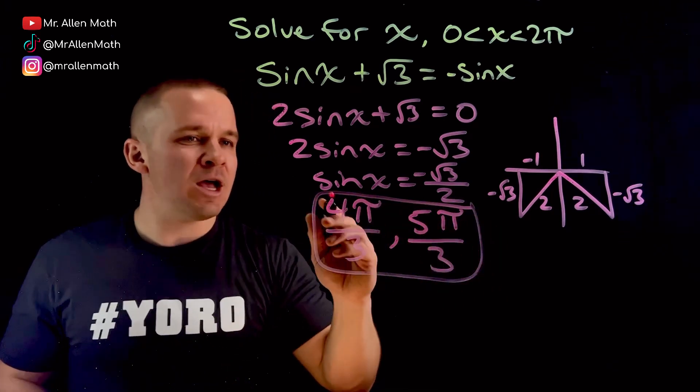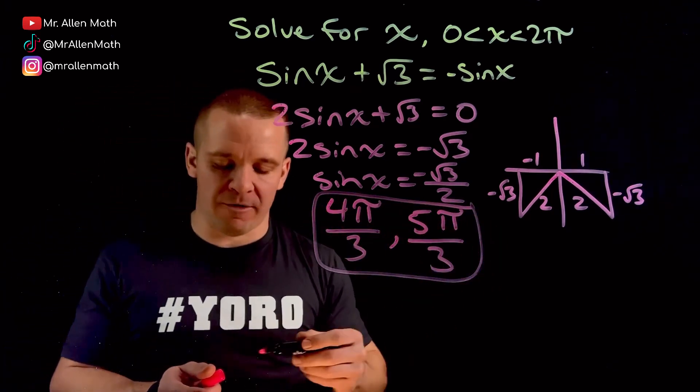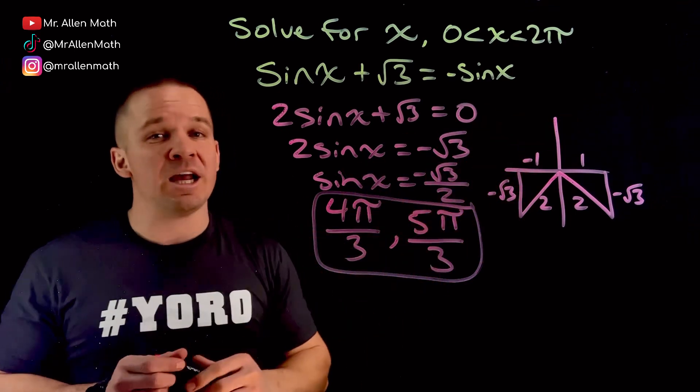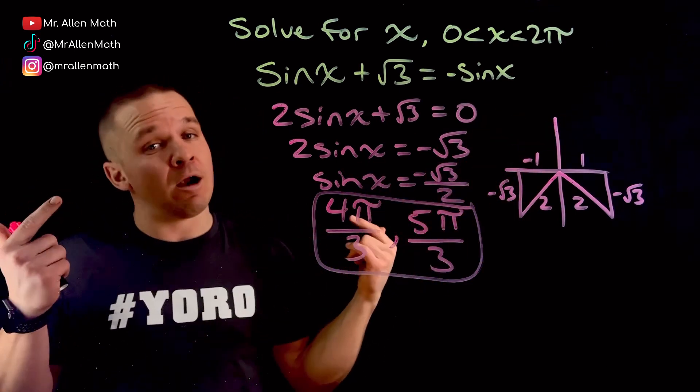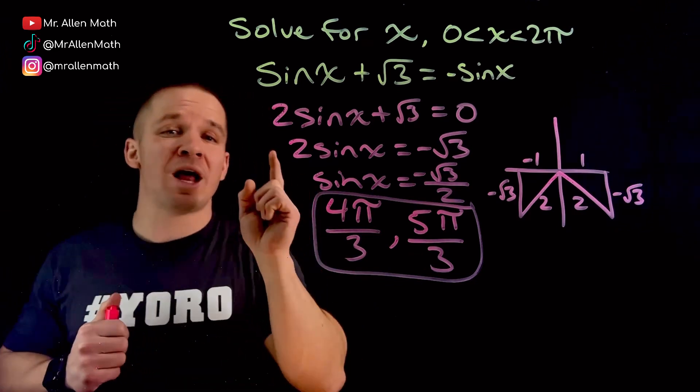Two solutions here. Sine is negative in my third and my fourth quadrant, right? It's positive in 1 and 2. So that all checks out. That's pretty dope. That's it, dogs. I will see you later.